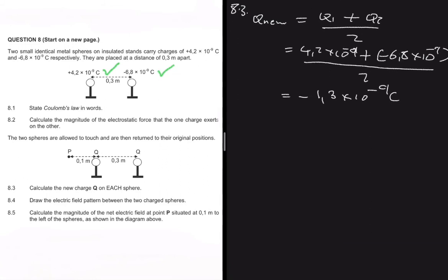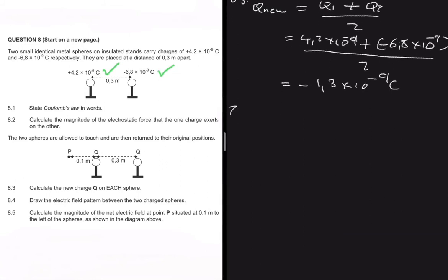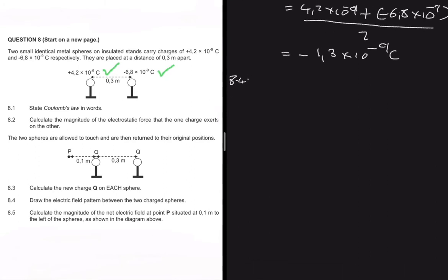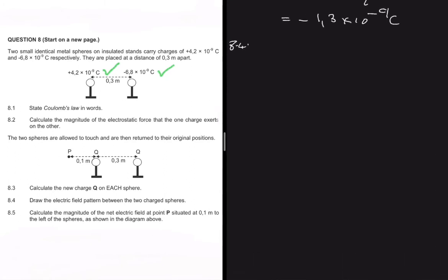Moving to 8.4: we need to draw the electric field pattern between the two charged spheres. Both spheres are now negative, with a charge of −1.3×10⁻⁹ coulombs. Two negative point charges repel each other, just as two positive point charges would repel each other.